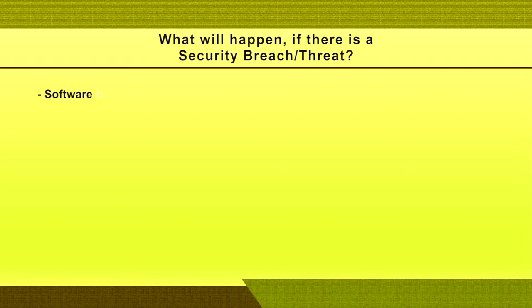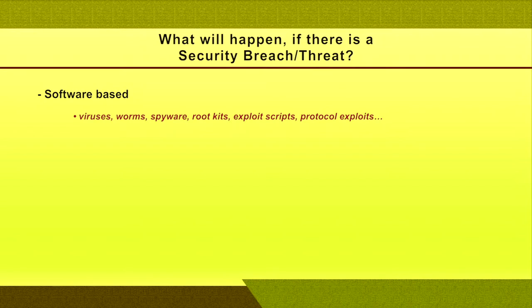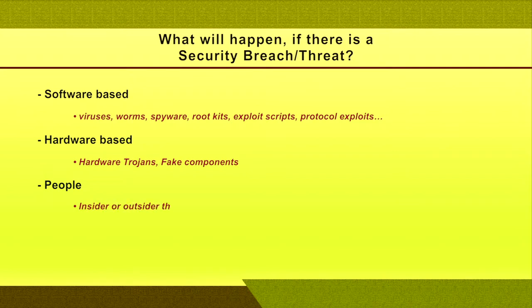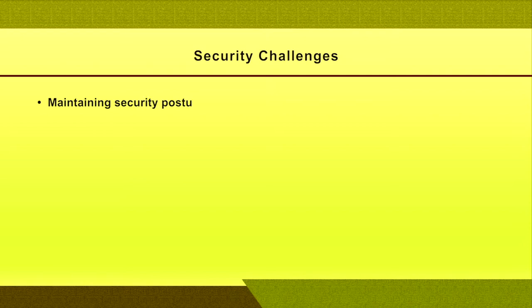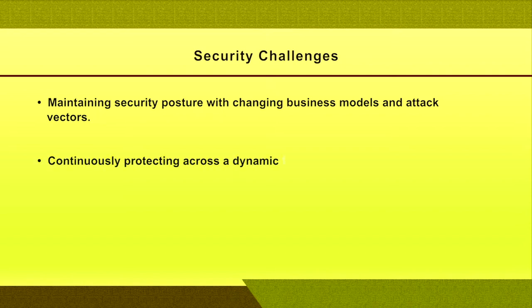The threat landscape is broadly categorized into three areas: software-based threats such as viruses, worms, spyware, and rootkits; hardware-based threats such as hardware trojans or fake components; and people-based threats, both inside and outside the organization. The focus domains are the network, system, application, and data or database layers. Maintaining a security posture with changing business models and attack vectors is challenging, as is continuously protecting across a dynamic threat landscape.